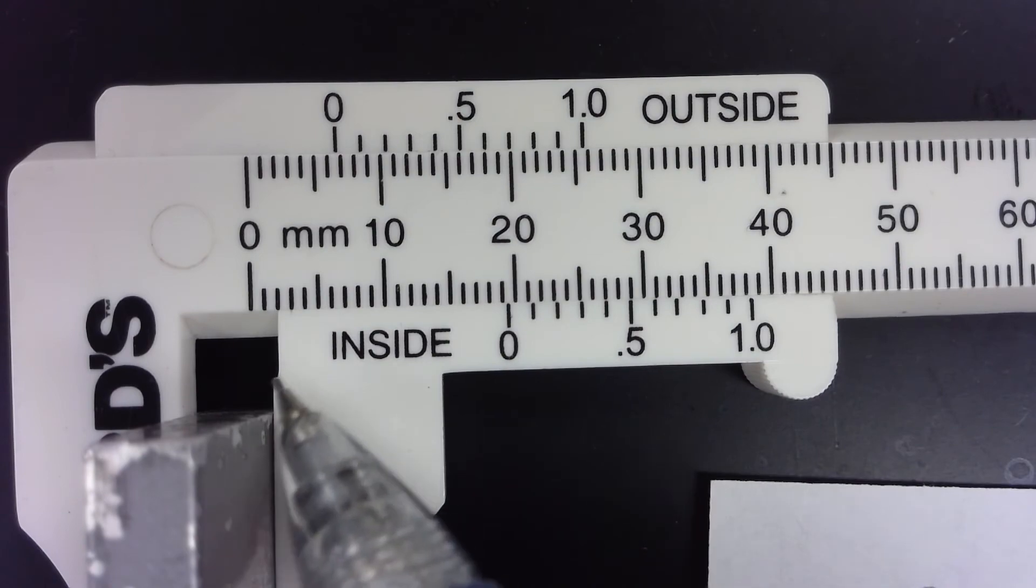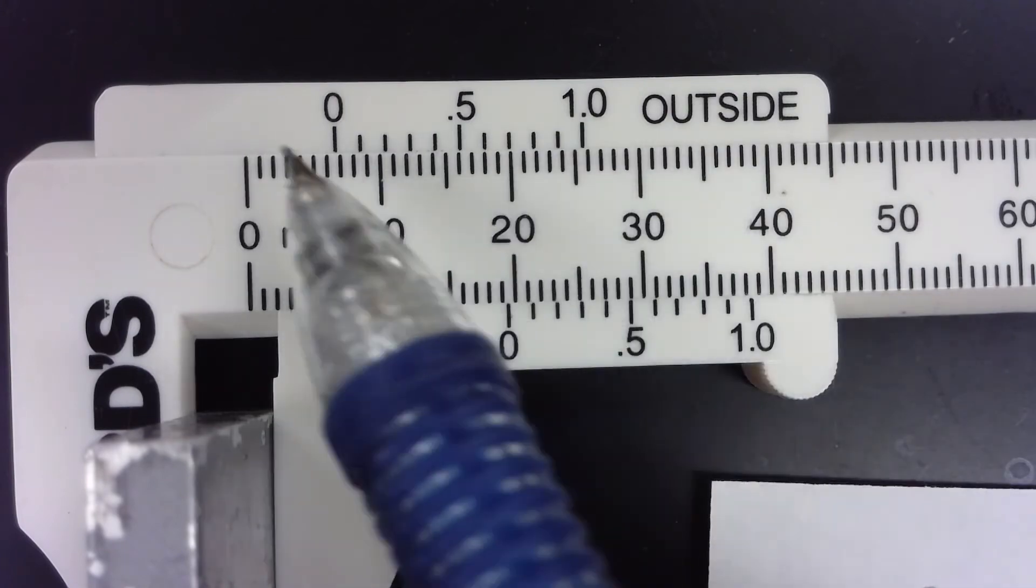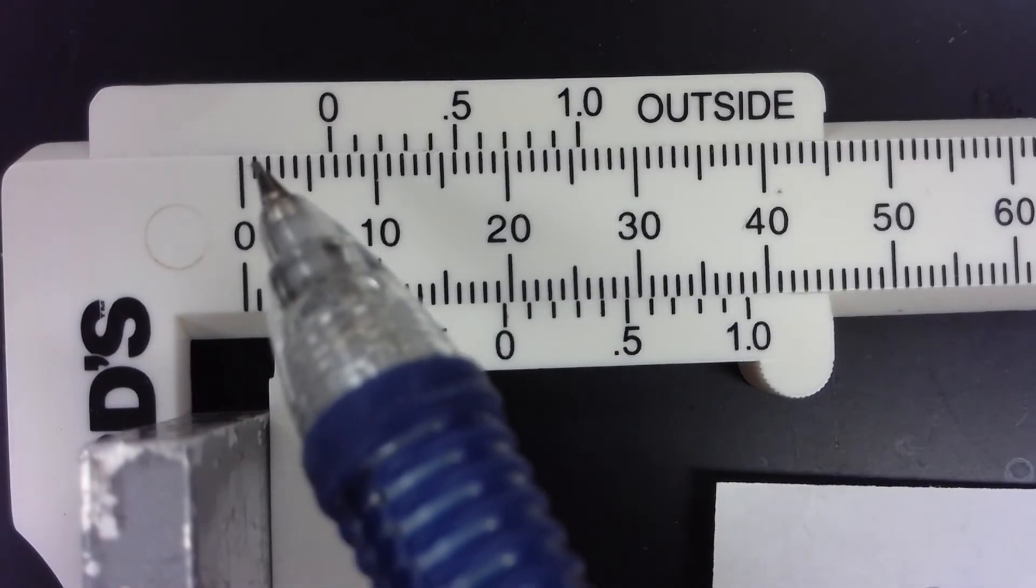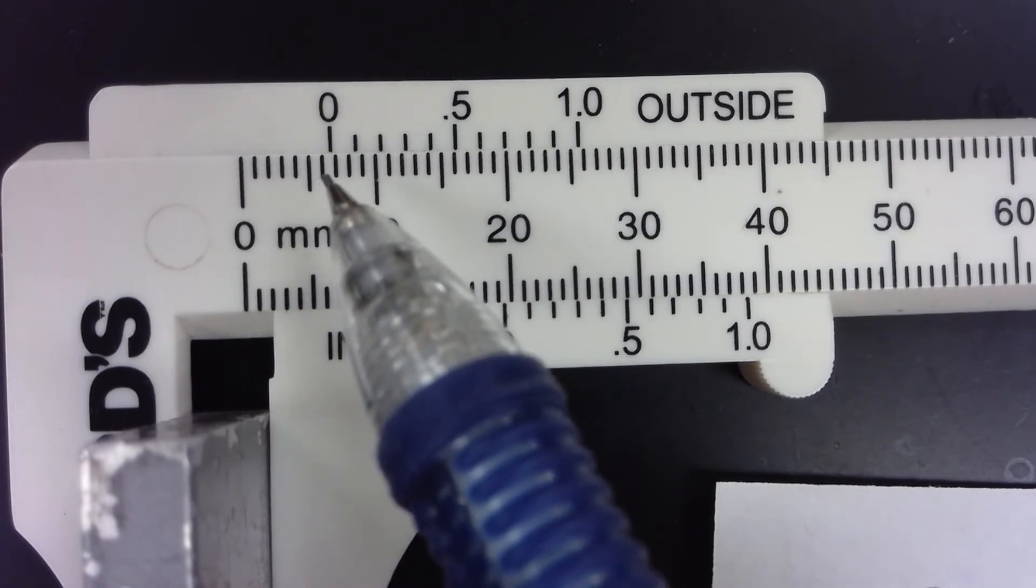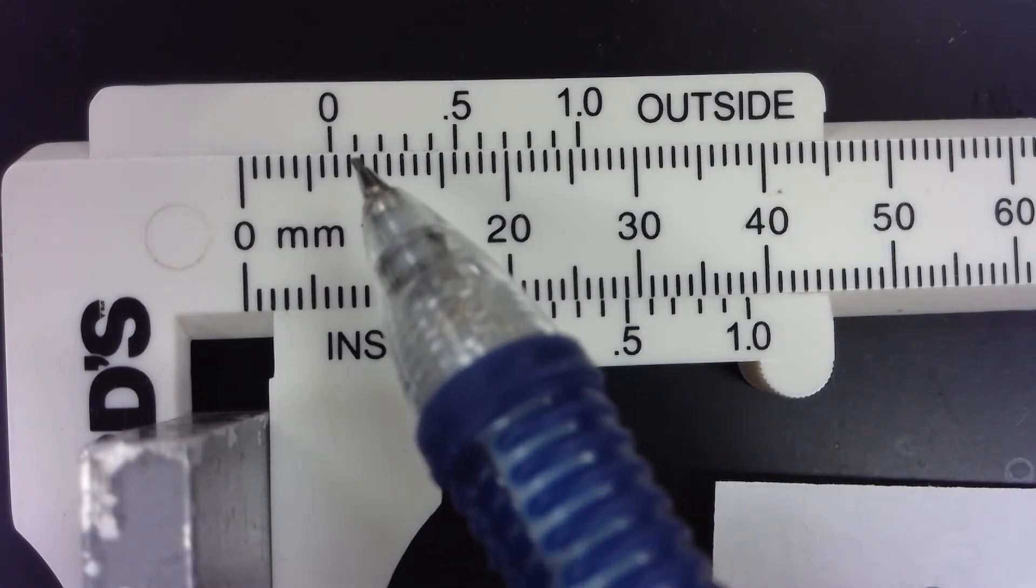We read where the zero is on the outside scale because we are reading the outside dimensions of this slab. And we see that this is at the sixth millimeter—six millimeters, a little bit past halfway.